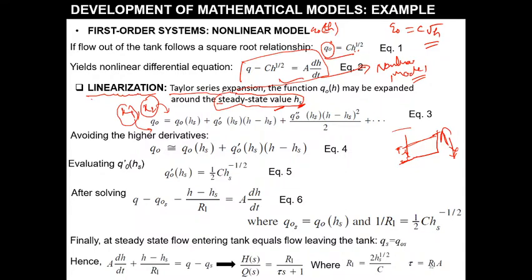Now, how is the Taylor series expression utilized to linearize the model? We expand q_naught(h) using the Taylor series: the first term is q_naught(hs), then the first derivative q_naught'(hs) times (h minus hs), then the second derivative q_naught''(hs) times (h minus hs) squared divided by factorial 2, then the third derivative q_naught'''(hs) times (h minus hs) cubed divided by factorial 3, and so on.